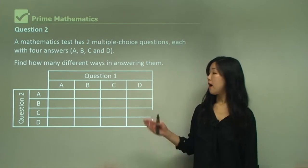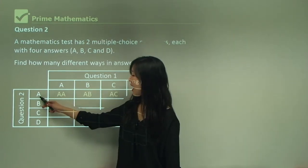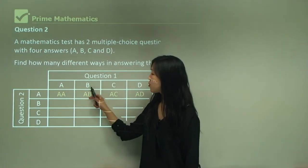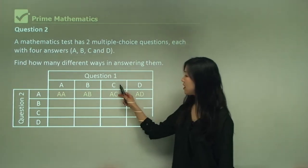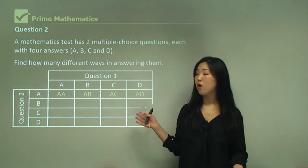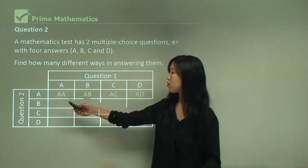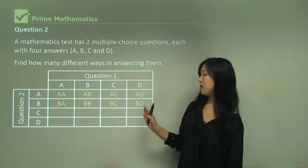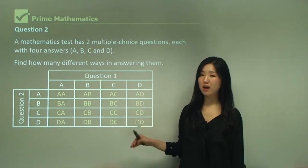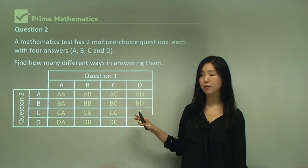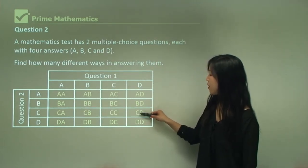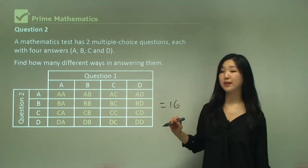I could get A for question one and A for question two, or B in question one and A in question two, C in question one and A in question two, D in question one and A in question two — it depends on what you choose for either one. You could also get B-B, B-C, B-D, and so on. These are all the possible outcomes listed in the table — each question has four choices, so four, eight, twelve, sixteen. This gives sixteen ways altogether.